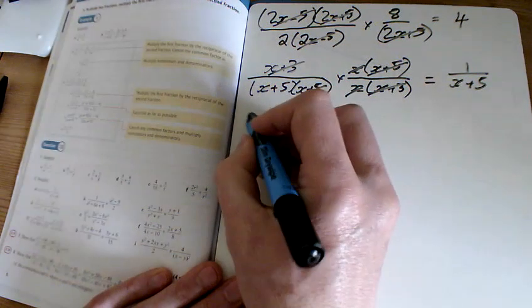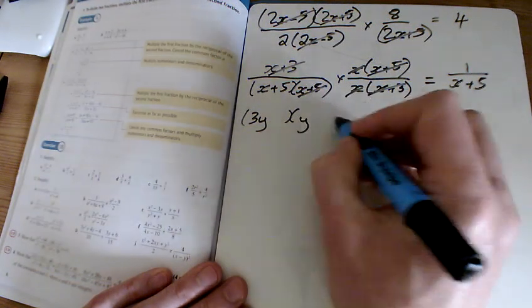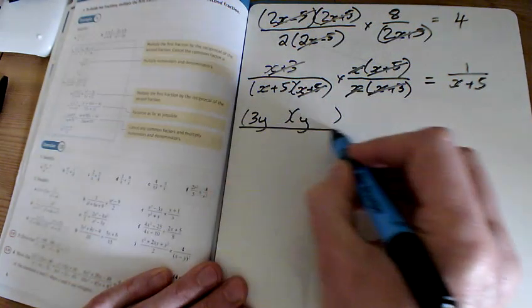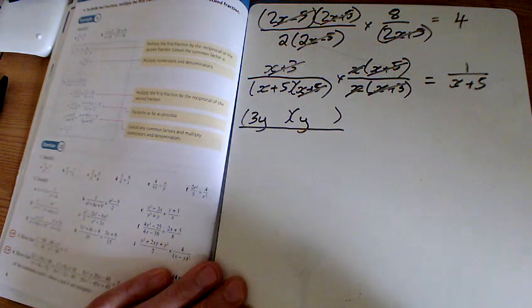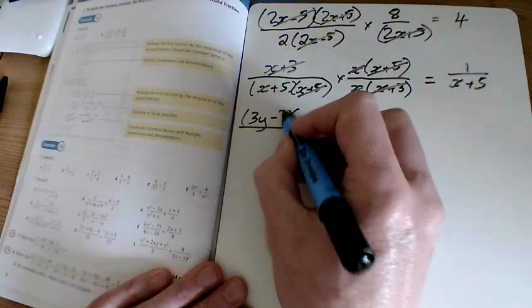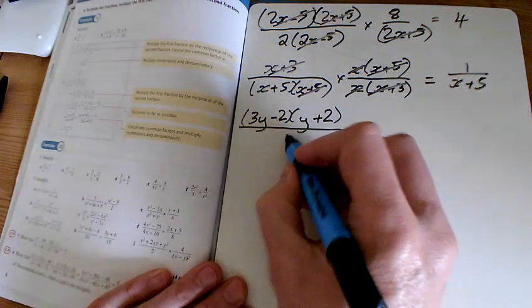For h, I've got 3y squared. Now this is where the people that have struggled to factorise have got an issue. So it's 3y squared plus 4y minus 4, and that will factorise to 3y minus 2 and y plus 2.